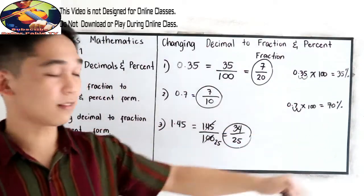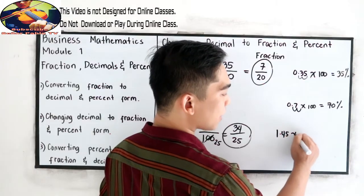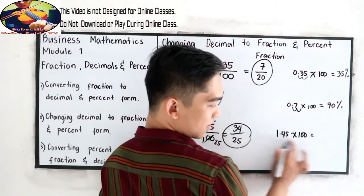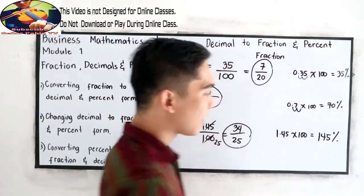And of course, to write into percent, 1.45 times 100, so 145, as simple as that.